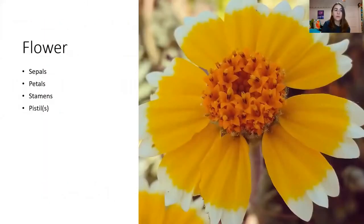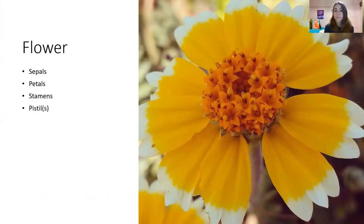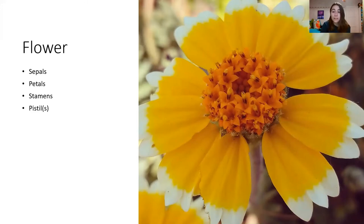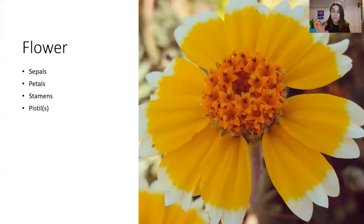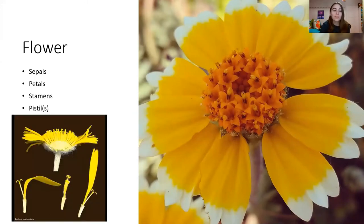A flower, by definition, is a single reproductive structure of a flowering plant, which usually includes sepals, petals, stamens, and/or pistils. So we might need to start changing our perception of what we see as a flower. Most people would look at this flower and say it's a flower — but is it? If you look carefully at the center, there's a bunch of miniature flowers, each containing their own sepals, petals, stamens, and pistils. Even more mind-blowing is that the petals of this flower are actually petals to their own singular flowers.